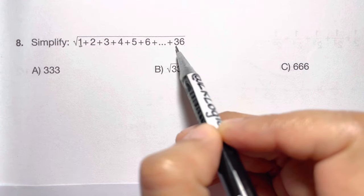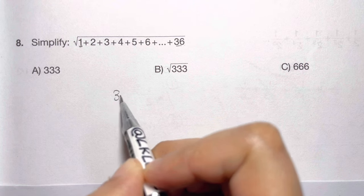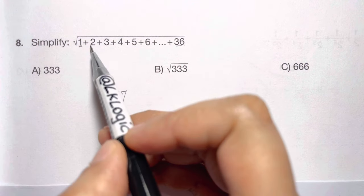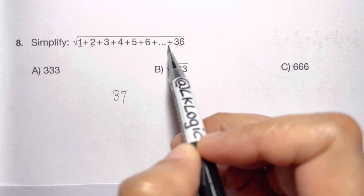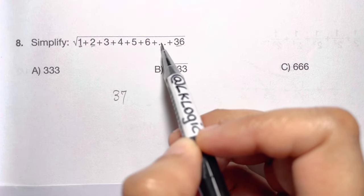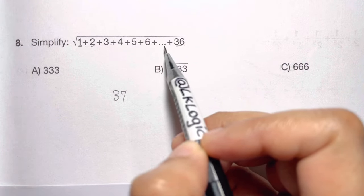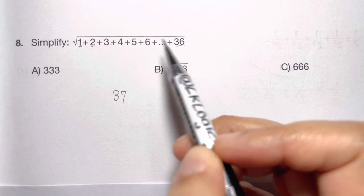If you see, 1 plus 36 will give you 37, then again 2 plus 35 will give you 37, 3 plus 34 gives you 37, 4 plus 33 gives you 37. So when you see, you can see the pairing - they are in partners: 1 plus 36, 2 plus 35, 3 plus 34, 4 plus 33, 5 plus 32, and so on.